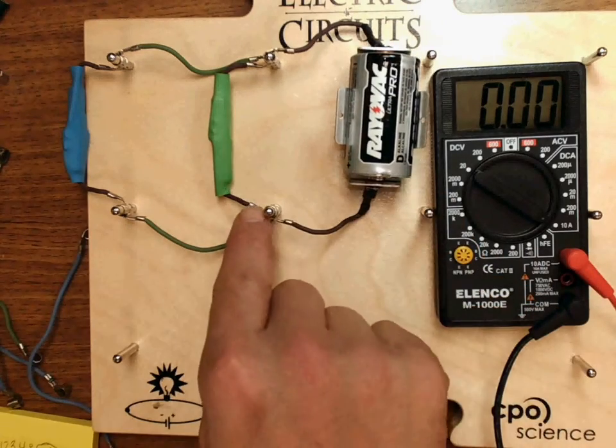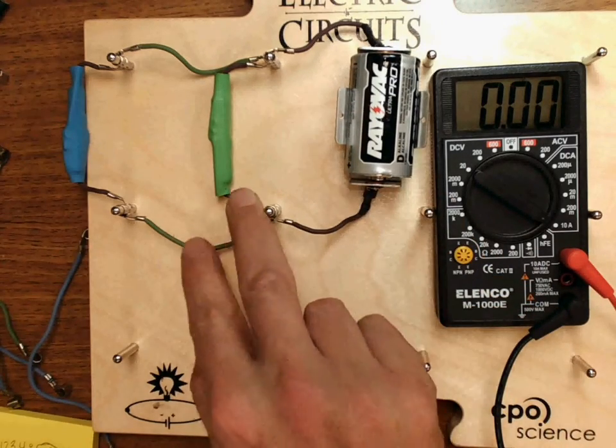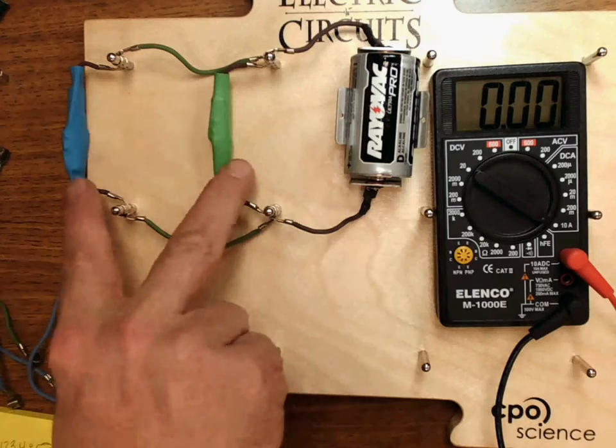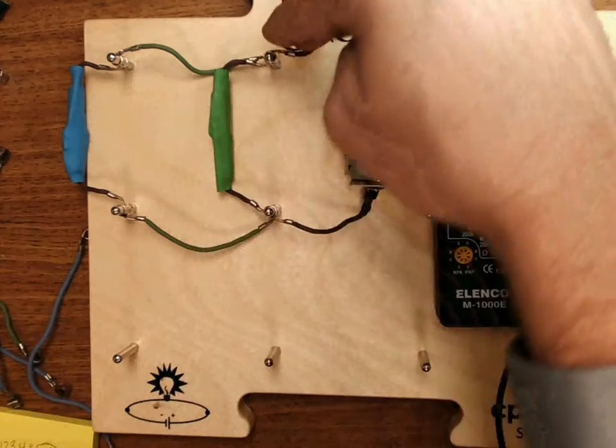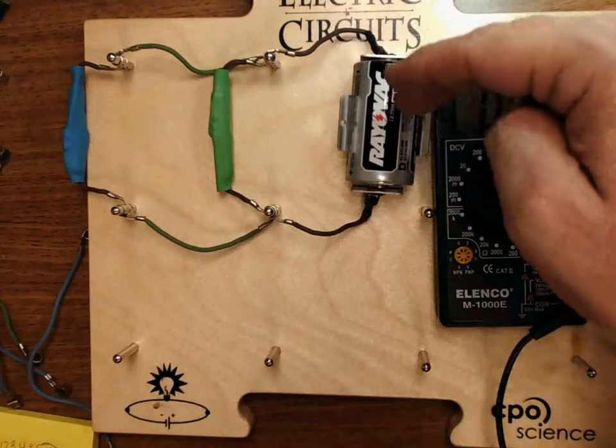The current is going to come up here and it goes to a split. It's going to split and go in parallel through the green and the blue resistors. Then it'll come back together and continue on back into the battery and repeat the loop.